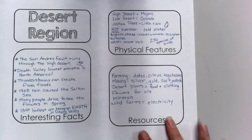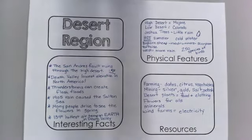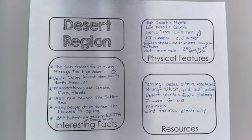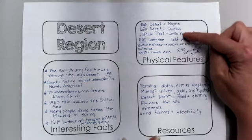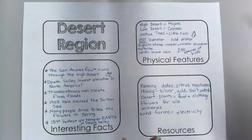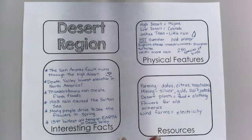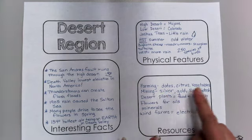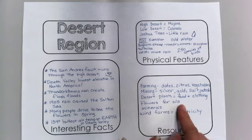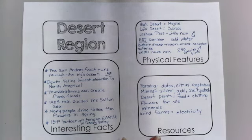We are going to make it a little more personalized by coloring the top one and cutting out. Some of the things I'd like to point out: the two different deserts, the Mojave and the Colorado — high desert and low desert. I find it particularly interesting the mining that happens in our desert areas for silver, gold, salt, and potash, and that flowers are for oils, and wind farms can produce electricity for near and far.